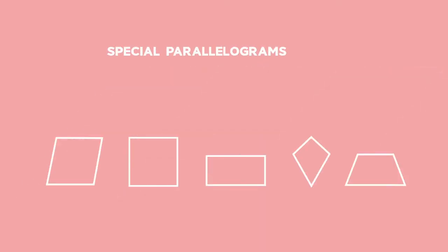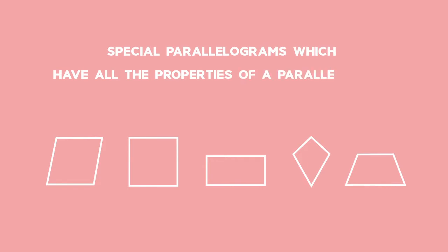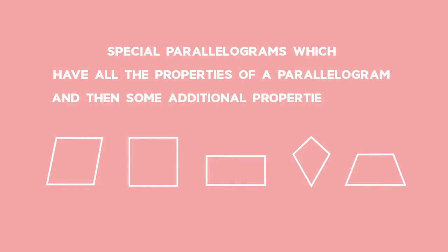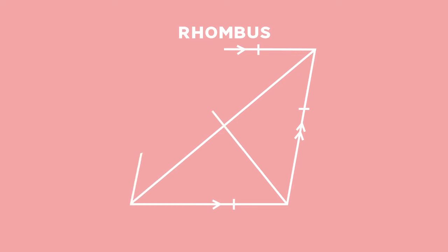These are special parallelograms which have all the properties of a parallelogram and then some additional properties as well. First, let's look at a special parallelogram called a rhombus.